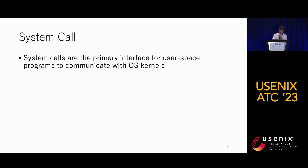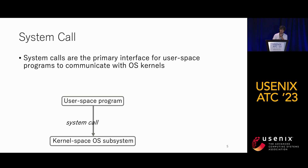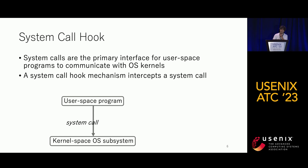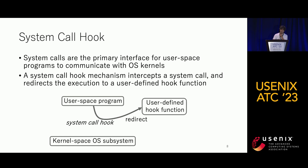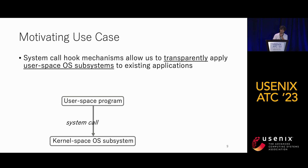The system call is the primary interface for user space programs to communicate with OS kernels. Here we have a user space program and there is a kernel. The communication between these two is done through the system call. A system call hook is a mechanism to intercept the system call and redirect the execution to a user-defined hook function.